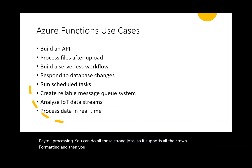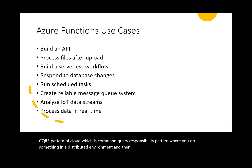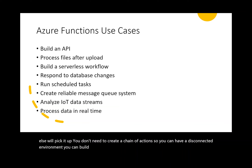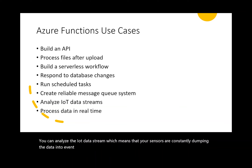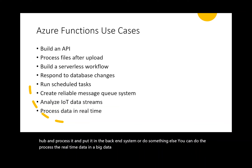You can create a reliable message queue system, especially in the CQRS pattern — Command Query Responsibility Segregation — where you work in a distributed environment, leave a message, and somebody else picks it up, building a disconnected environment. You can also analyze IoT data streams where sensors constantly dump data into Event Hub; a function picks up the value, processes it, and puts it in a back-end system. You can also process real-time data in a big data scenario.